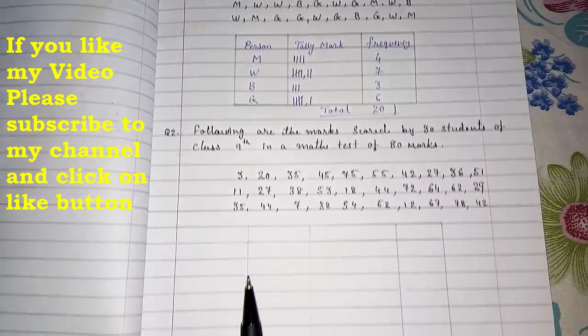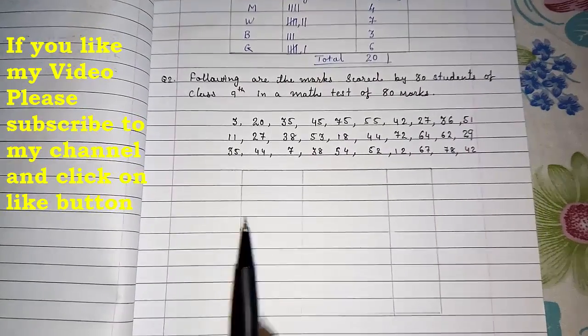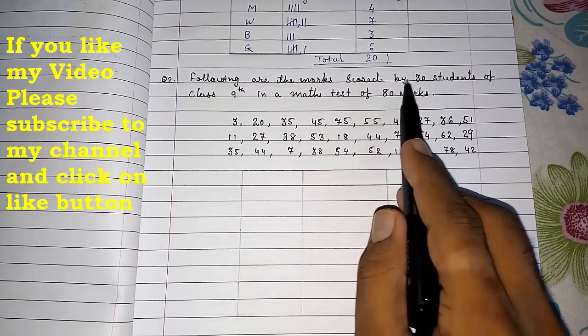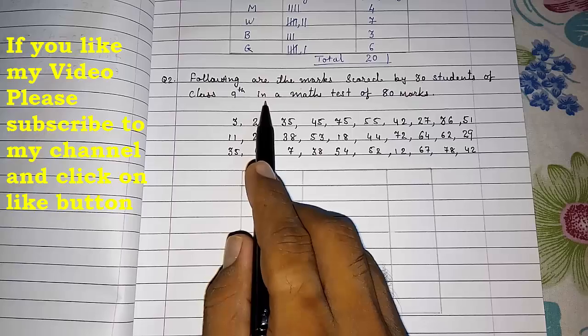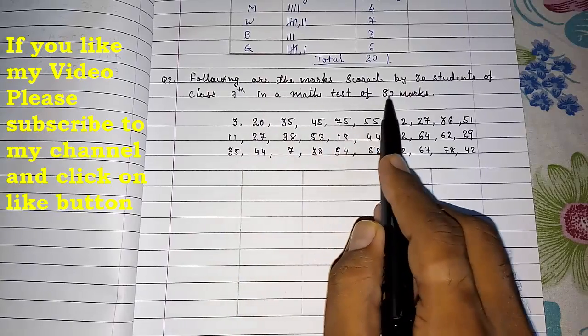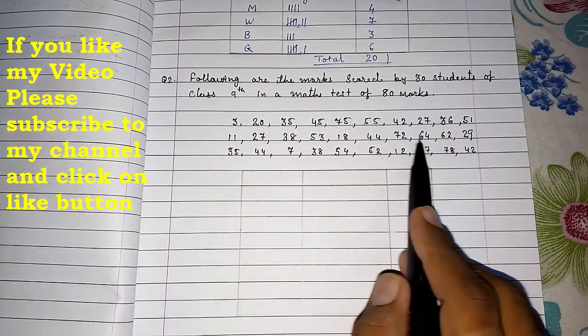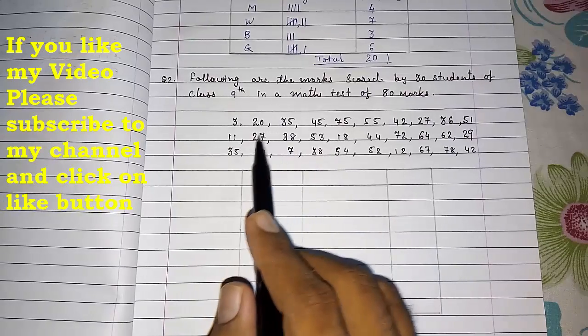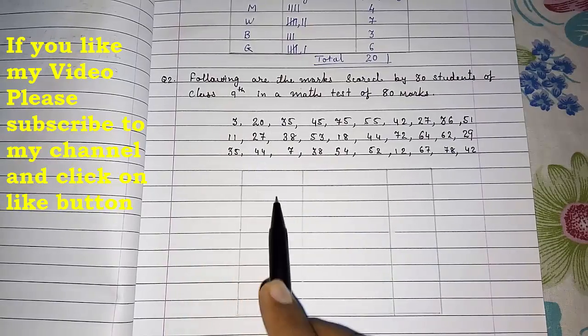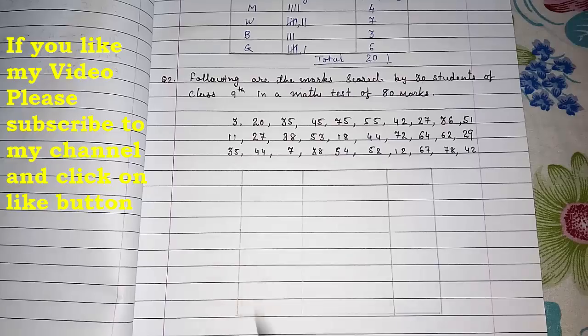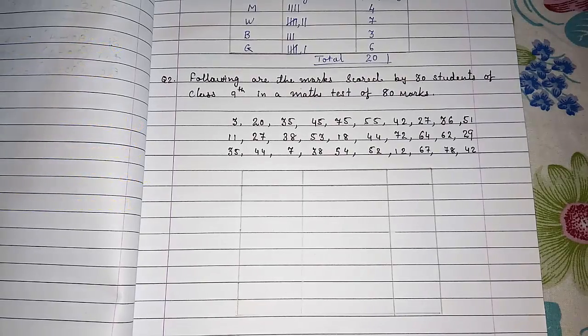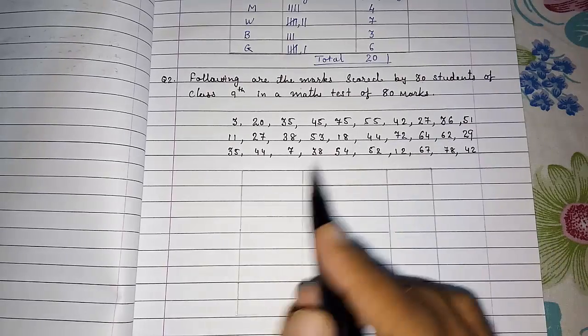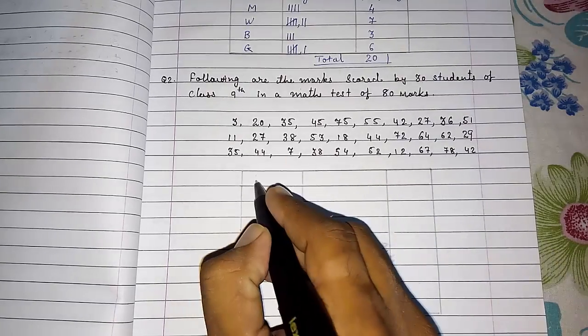Now I am going to solve this second sum. The following are the marks scored by thirty students of class 9th in a math test out of eighty marks. Look, these are the marks. Now you cannot give them single numbers, that one mark, two marks, three marks, four marks up to eighty. So what we are doing is we are going to divide it into class or you can say group.